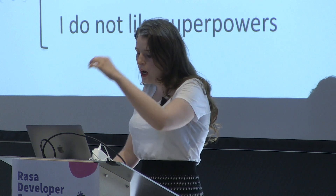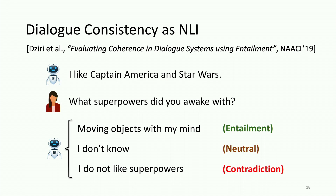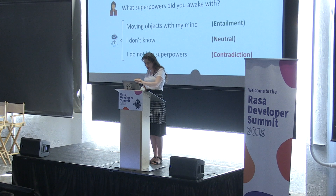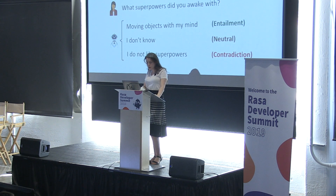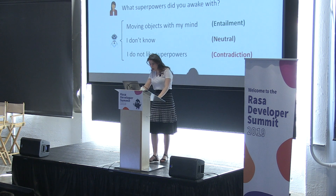For example, if the bot responds to 'What superpowers did you awake with?' with 'moving objects with my mind,' we can consider this sentence as very appropriate and label it with the class entailment. If the bot generates something like 'I don't know,' we consider this a very generic response that does not align with Grice's maxims — since we should be clear and specific — and we label it as neutral. If the bot generates 'I do not like superpowers,' we consider this a contradiction, as the bot clearly contradicts itself.